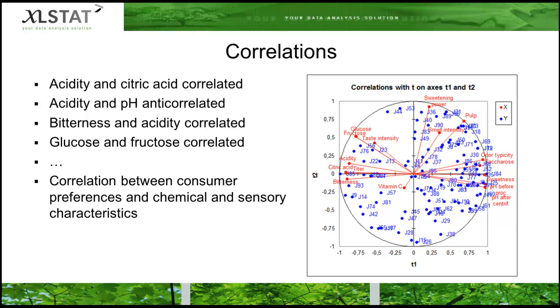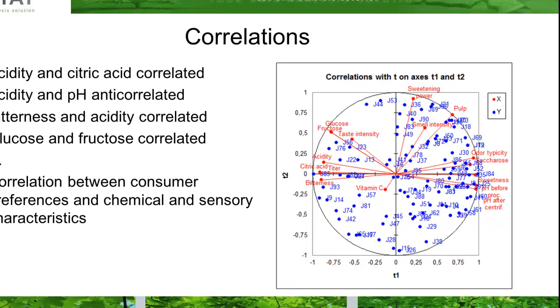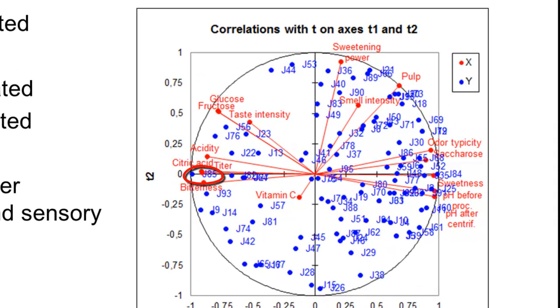In the correlation loading plot, we can easily visualize the relationship between the x variables such as acidity and citric acid and the bitterness. It is also possible to understand why a certain type of consumer prefers some juices. For example, judge 85 likes acidic and bitter juices, while judge 84 likes sweet juices.